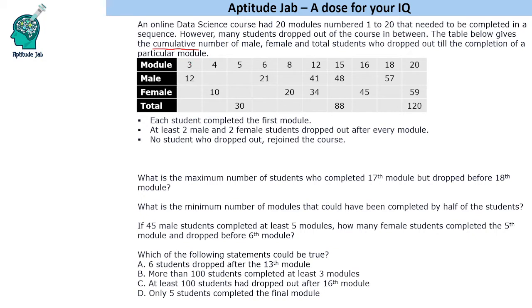For example, till module 3, 12 male students had dropped out; till module 4, 10 female students had dropped out; till module 5, 30 students had dropped out; till module 6, 21 male students; till module 8, 20 female students — and so on.